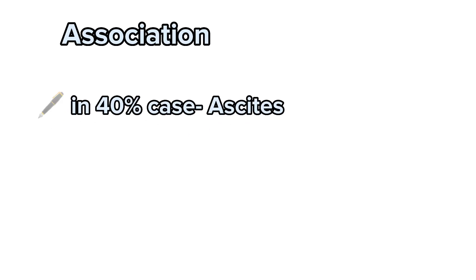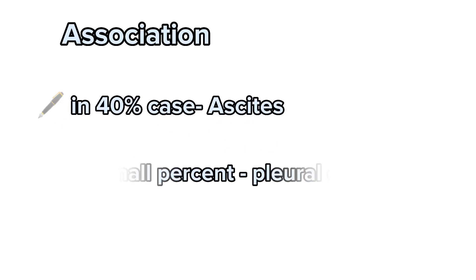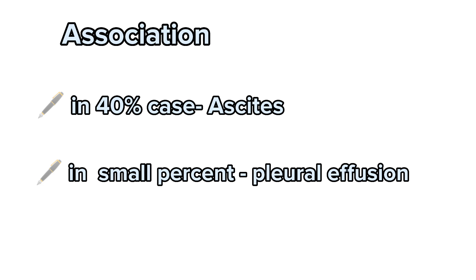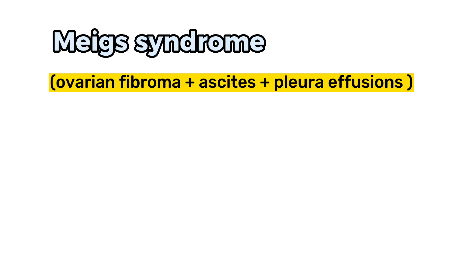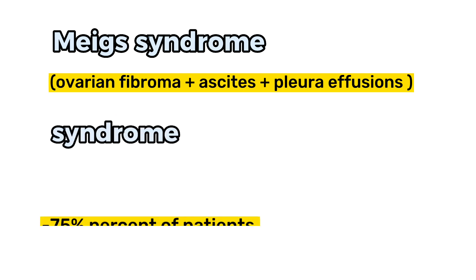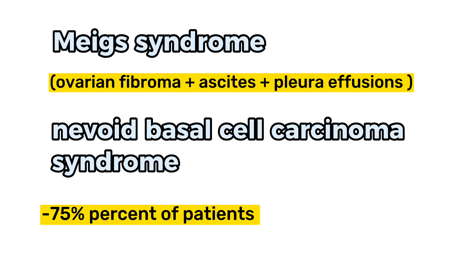In 40% of cases, fibromas are associated with ascites. In a small percent of cases, it is associated with pleural effusion. When ovarian fibroma is present with ascites and a pleural effusion, it is known as Meigs syndrome. Fibromas are seen in 75% of patients with nevoid basal cell carcinoma syndrome.